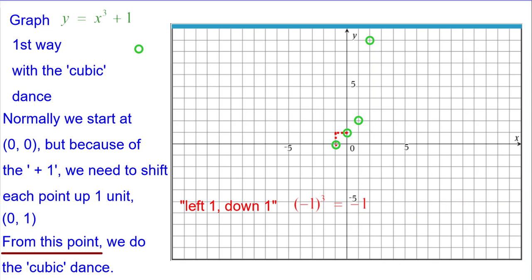left one down one because negative one the quantity cubed is negative one, and left two down eight because negative two the quantity cubed is negative eight.